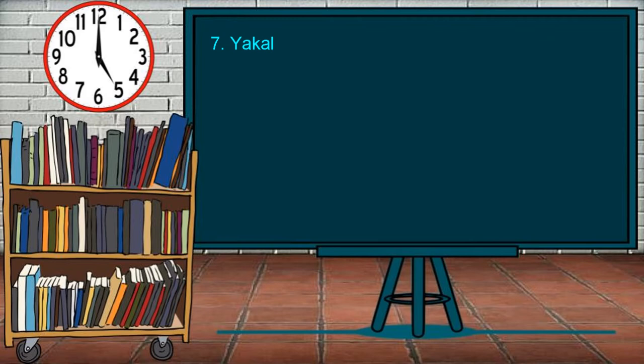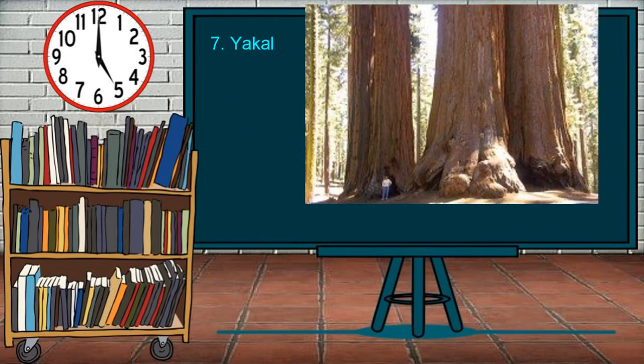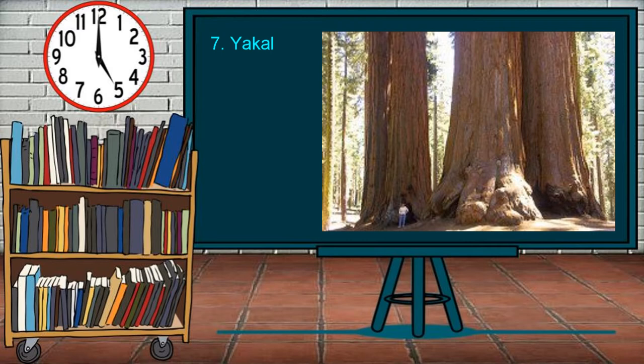Yakal is another common commercial species of trees. Yakal is a medium to large tree about 25 to 30 meters tall. Its wood is hard and dark brownish-yellow. The branchlets are rather slender, blackish, and slightly hairy.